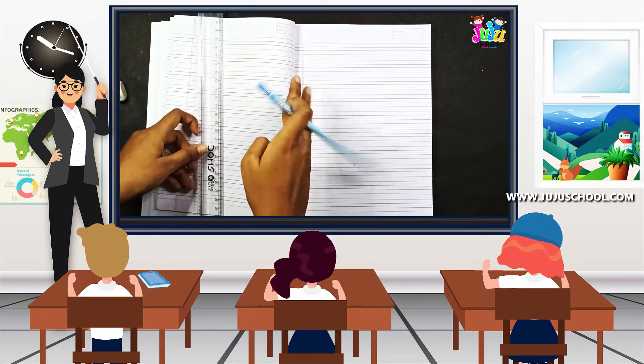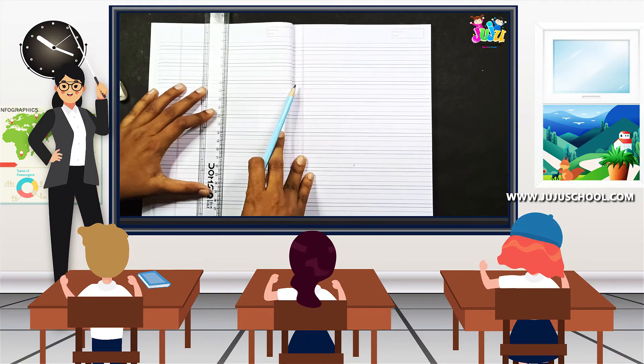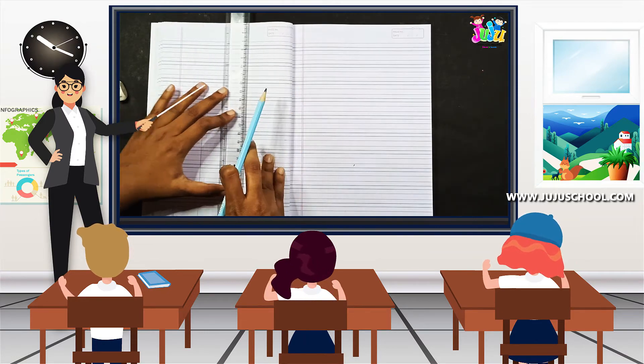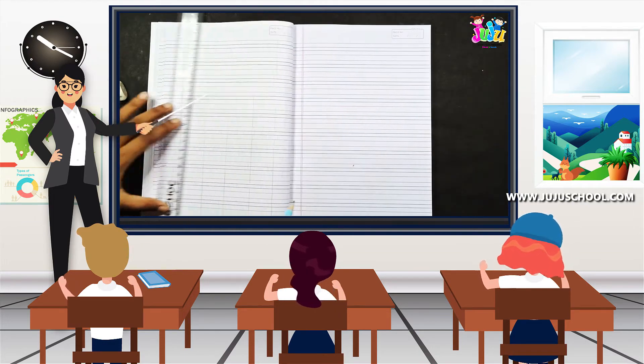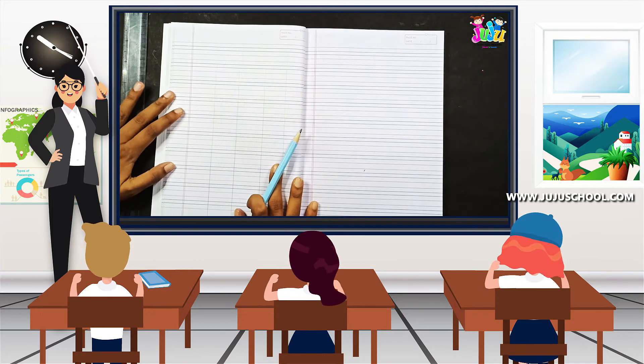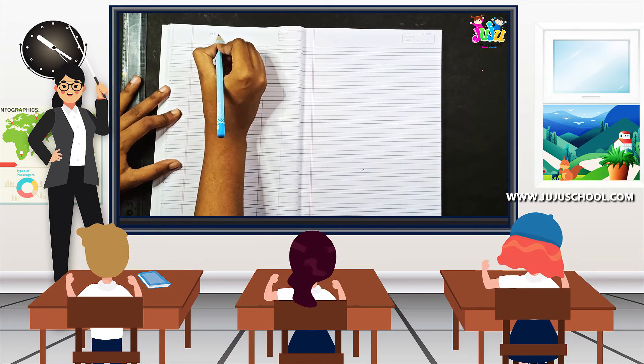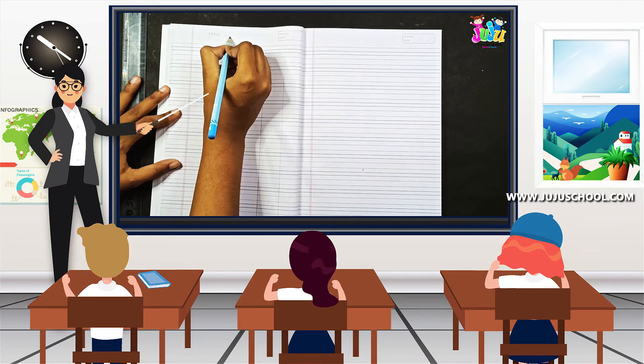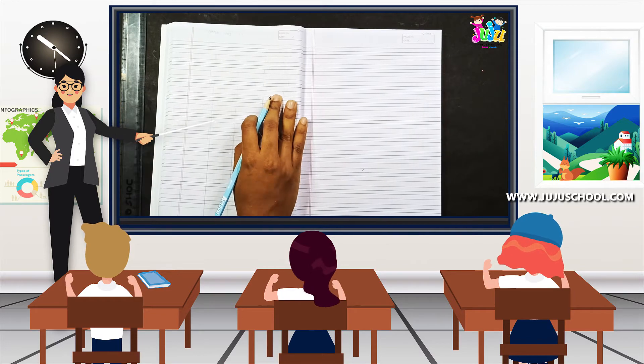In the previous class we wrote till lowercase F, and now we are going to write uppercase G. With the help of your parents, write today's date, which is very important, and write the heading as uppercase G.